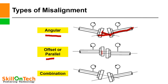This offset, and combination — so angular or offset combination may occur generally in the prime mover and your driven shaft. Here you can see this is a combination of offset and angular misalignment.